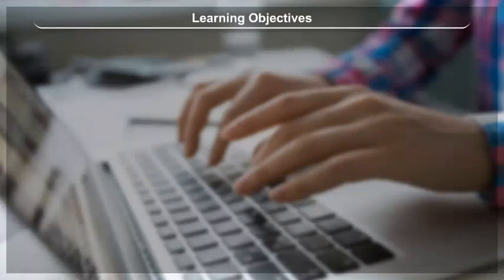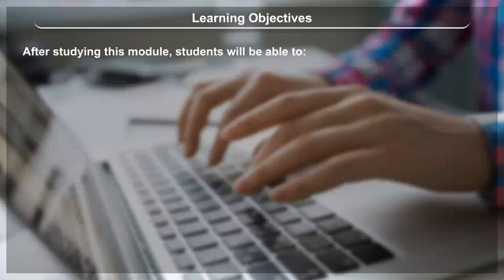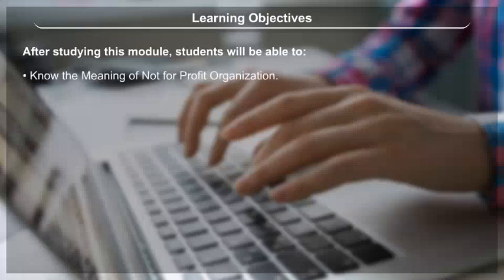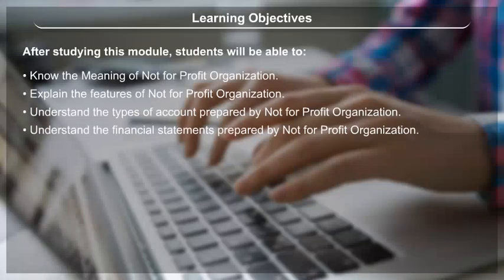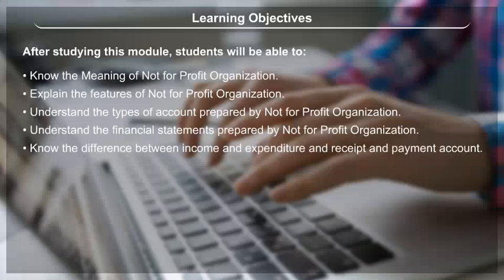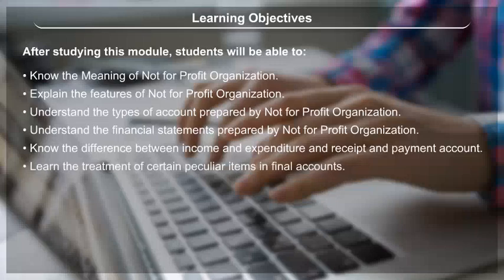Learning Objectives. After studying this module, students will be able to: know the meaning of not-for-profit organization, explain the features of not-for-profit organization, understand the types of accounts prepared by not-for-profit organizations, understand the financial statements prepared by not-for-profit organizations, know the difference between income and expenditure and receipt and payment account, and learn the treatment of certain peculiar items in final accounts.